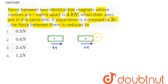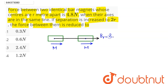The magnetic field due to one magnet on the other along the axial line at distance r is given by the magnitude of the radial component, which is the net magnetic field: B = (mu naught / 4pi) × (2m / r³).